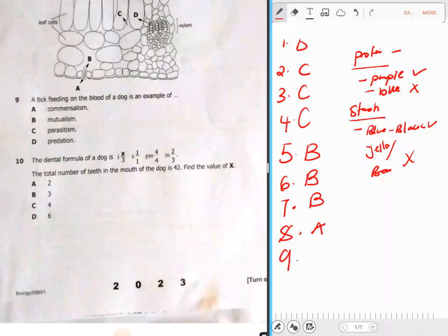Question 9: A tick feeding on the blood of a dog is an example of A. Commensalism, B. Mutualism, C. Parasitism, and D. Predation. Here it's actually parasitism because a tick is a parasite. Now what is mutualism? Mutualism is where something feeds on an organism, but not only does that benefit from that organism—that organism which is being fed by that other creature is also benefiting, so it's a mutual thing. But commensalism is where one benefits while the other one does not.